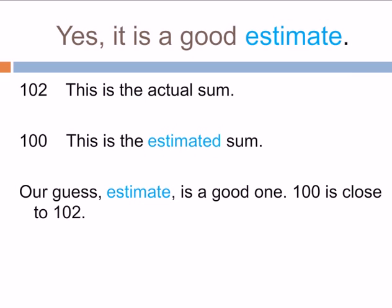102 is the actual sum, and 100 is the estimated sum. Our guess, our estimate, is a good one. 100 is close to 102.